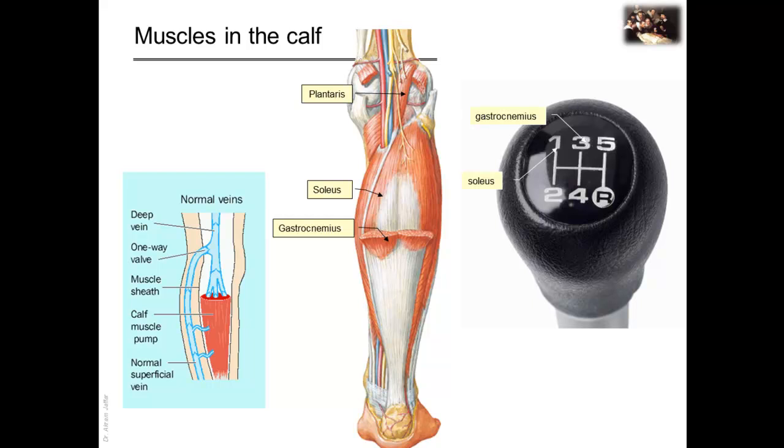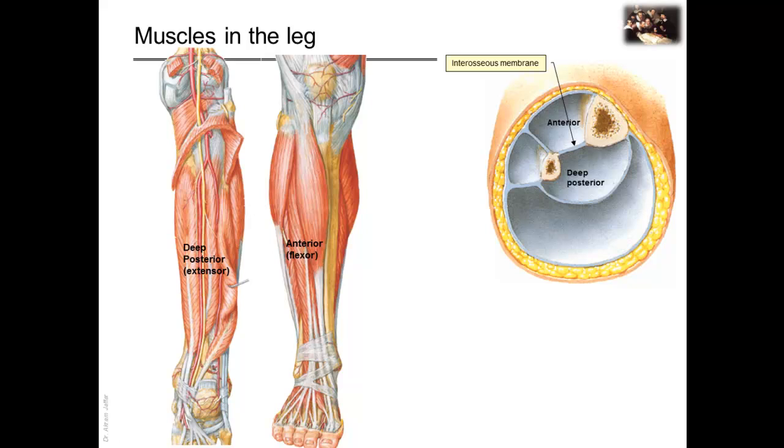Soleus has an extensive venous plexus within the body of the muscle and around it. This forms the main muscle pump, or peripheral heart, which returns blood to the heart against gravity. These veins are also a common site of deep venous thrombosis, DVT, that may occur after immobilization.